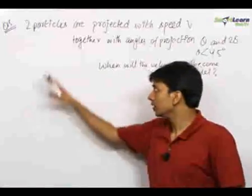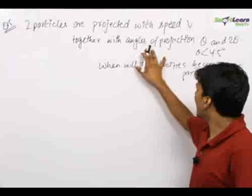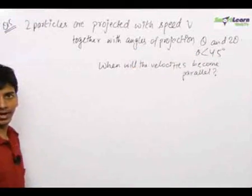There is another question of projectile motion. Two particles are projected with speed v together with angles of projection theta and 2 theta. When will their velocities become parallel?